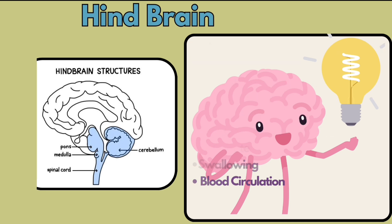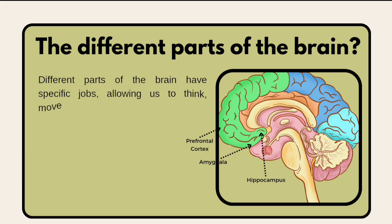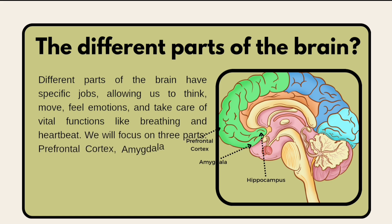The hindbrain also controls sleep and breathing, and regulates heart rate, swallowing, and blood circulation. The different parts of the brain have specific jobs allowing us to think, feel, move, and take care of vital functions like breathing and heart rate. We will focus on three parts: the prefrontal cortex, the amygdala, and the hippocampus.